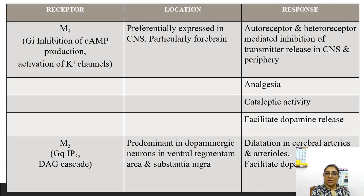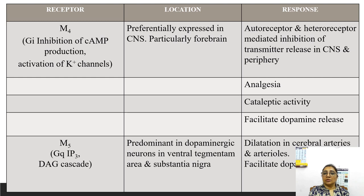M4 receptors are inhibitory, acting through inhibition of cyclic AMP production and activation of potassium channels causing hyperpolarization. They are preferentially expressed in the CNS, particularly in the forebrain. Responses include autoreceptor and heteroreceptor-mediated inhibition of neurotransmitter release in CNS and periphery, analgesia, cataleptic activity, and facilitated dopamine release. M5 receptors are also excitatory through the inositol triphosphate and diacylglycerol cascade, predominantly in dopaminergic neurons in the ventral tegmental area and substantia nigra, causing dilatation of cerebral vessels and facilitated dopamine release.